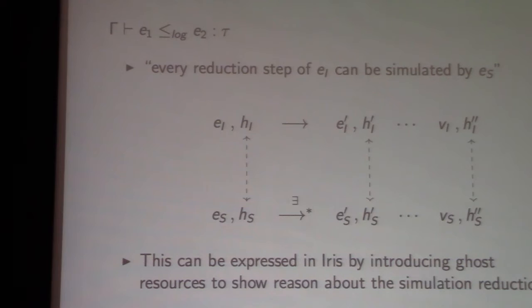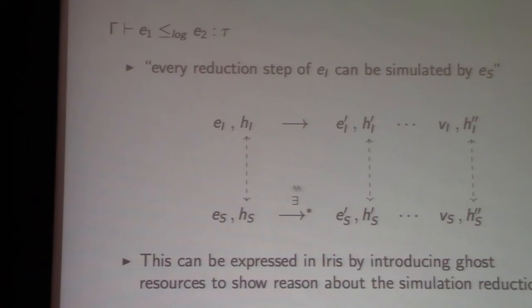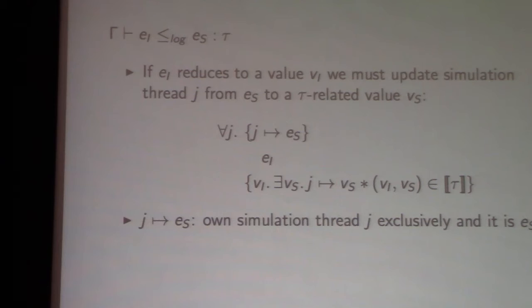The standard way to reason about this using logical relations is a modular simulation argument. The idea is: any reduction the implementation can do, you can match with the specification from any related heaps. If the implementation reduces to a value, you want the specification to reduce to a related value with related heaps. If the implementation reduces to another expression, you want the specification to be able to reduce to a related expression with related heaps, and so on. We can capture this in a unary program logic by introducing ghost state to reason about the second execution.